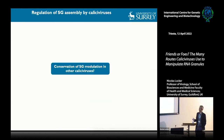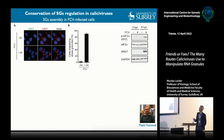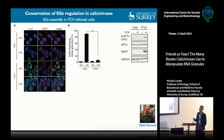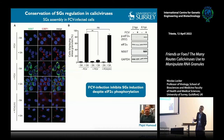We then asked whether this response is conserved in other caliciviruses. My PhD student Majid showed that feline calicivirus induces EIF2-alpha phosphorylation. However, when cells were infected with FCV and then challenged with sodium arsenite, they lost their ability to assemble stress granules—again showing that another calicivirus has the ability to impair stress granule formation. This could be rescued by inactivating the virus, showing it is an active process.